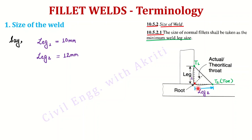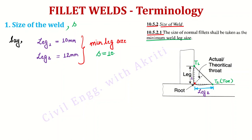Let's look at the leg length. Root to T1 is leg 1 and root to T2 is leg 2. For example, we have two legs — leg 1 is 10 mm and leg 2 is 12 mm. The minimum leg size is equal to 10 mm. So the size of the weld is equal to 10 mm, because the minimum leg size is 10 mm.